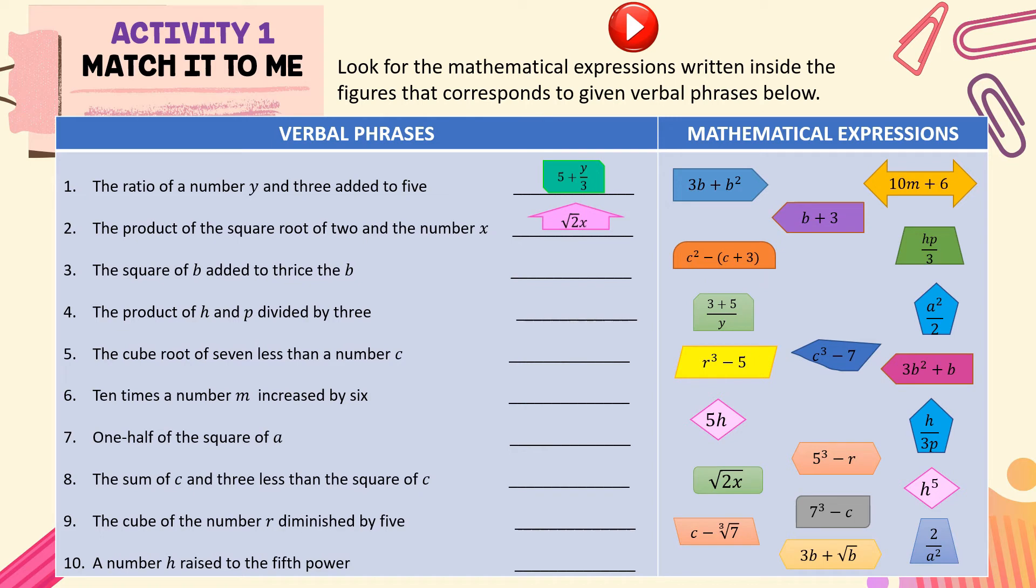So, the number X is not included on the radical sign. For number 3, the square of B added to thrice the B. We have 3B plus B squared. So, it is written from right to left.